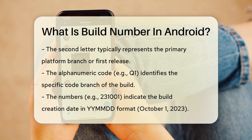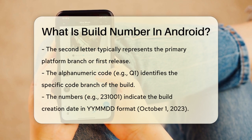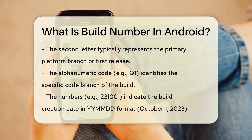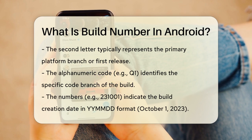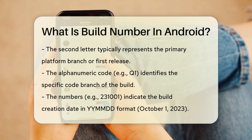The next letter, P, usually represents the primary platform branch or the first release. The alphanumeric code Q1 identifies the code branch the build was made from. The numbers 231001 tell you the date the build was created, in the format YYMMDD.